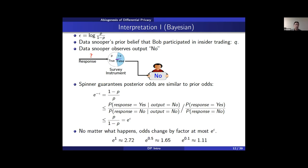These guarantees hold for any differentially private algorithm in the local model. Since e to the epsilon refers to the change in odds, some typical values: epsilon equals 1 allows a change by a factor up to 2.72; epsilon equals 0.5 allows a change up to 1.65; and epsilon equals 0.1 allows a change of around 1.11.